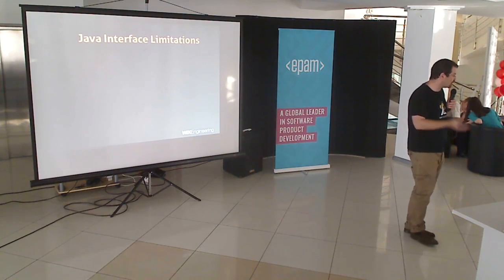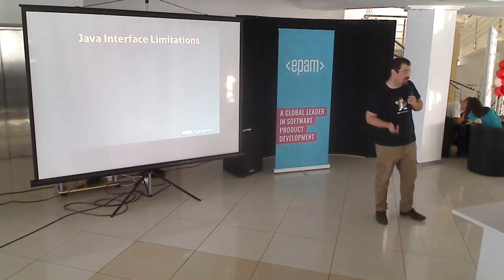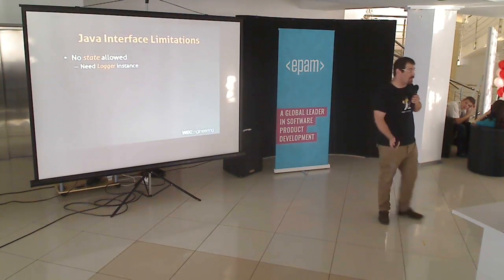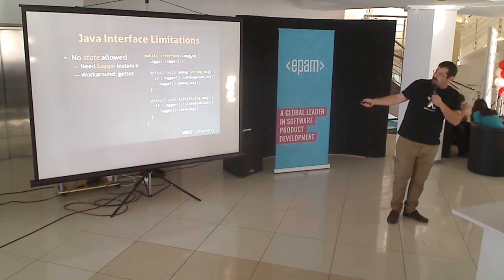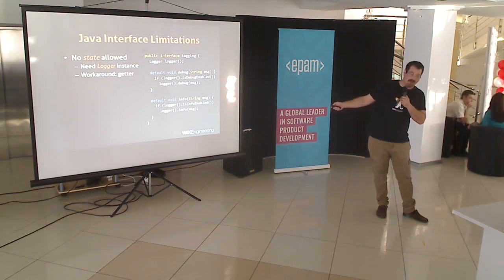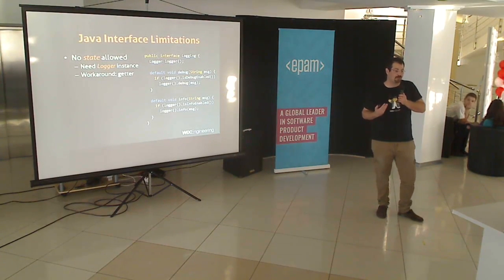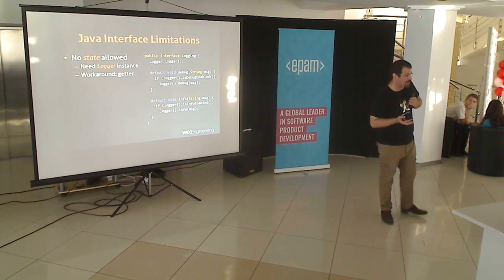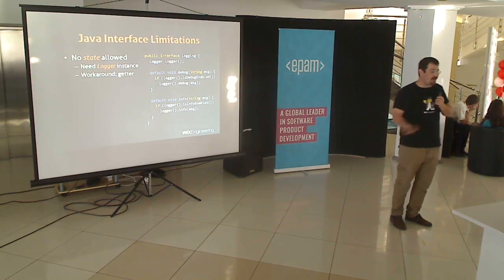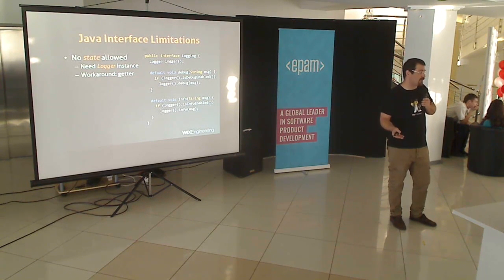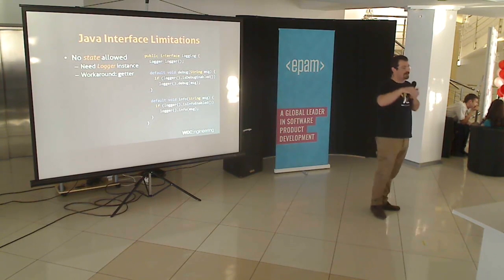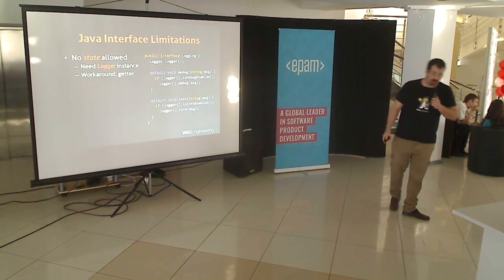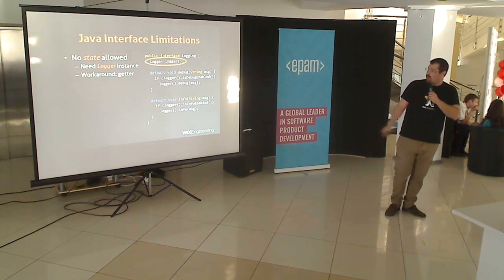At first glance this might appear to be a partially implemented interface, which is kind of how most people perceive Scala traits. But not really, because you cannot carry state — and you need a logger instance. So you end up having to define a getter for the log instance, just to be able to provide a logger to the internal implementation defined within the interface. And once you do that, you've actually lost most of the benefits, because you still have the boilerplate — you still have to implement a getter that goes to the log manager and brings in a log.